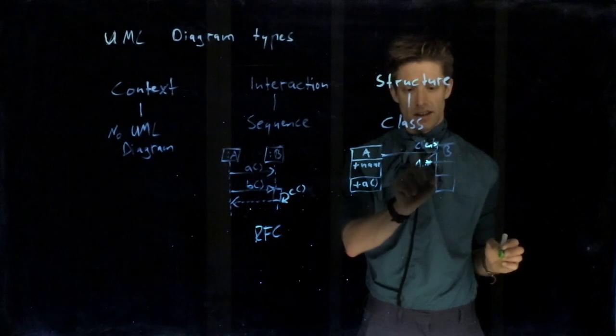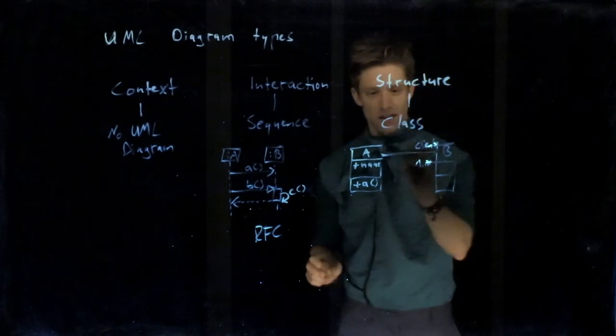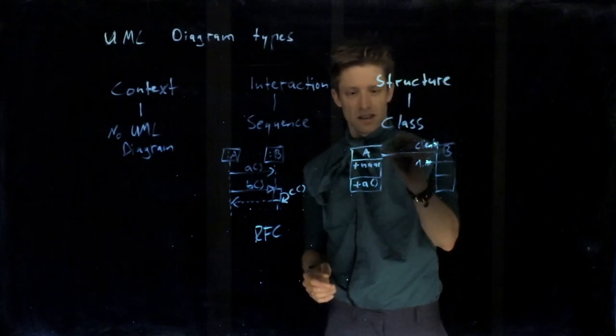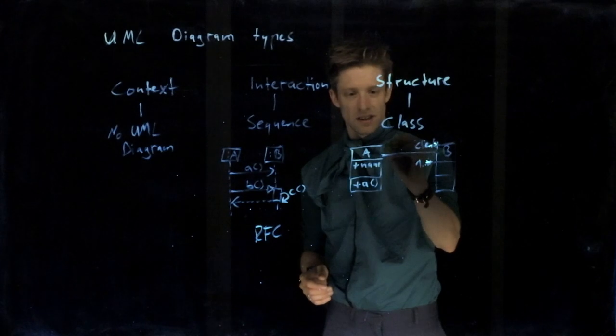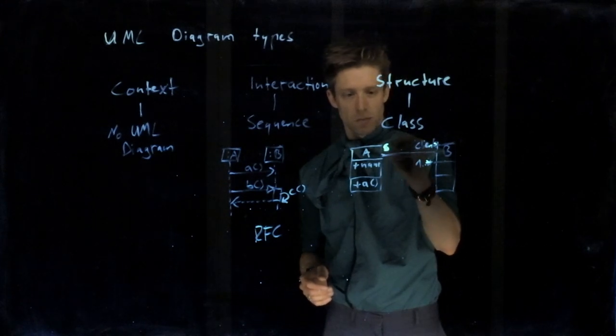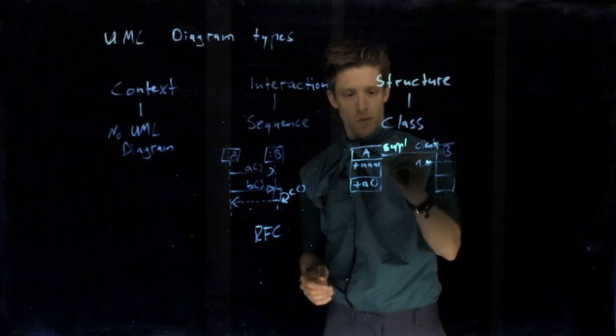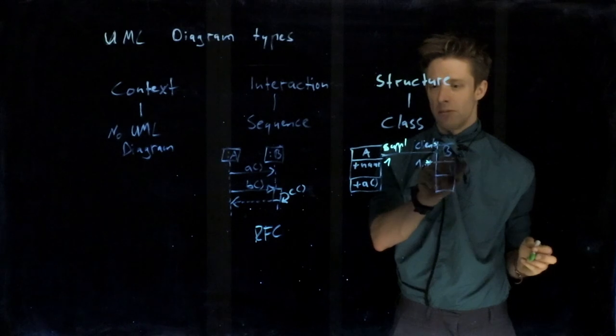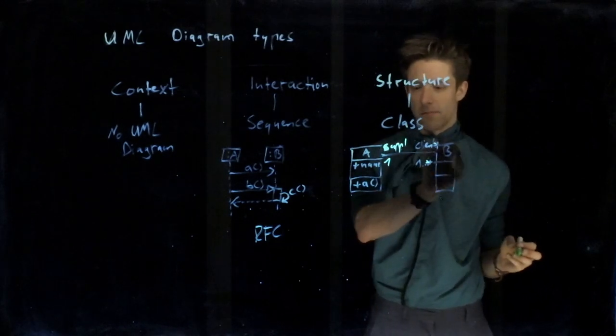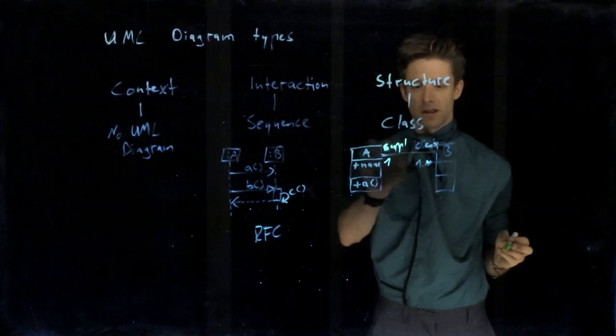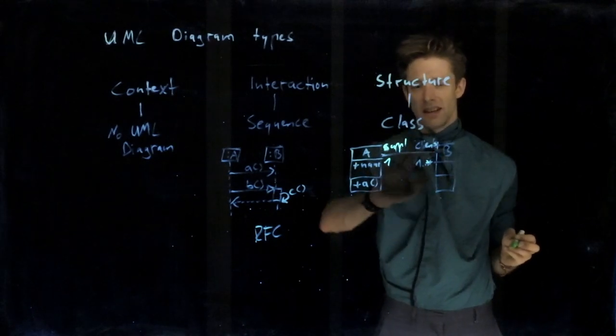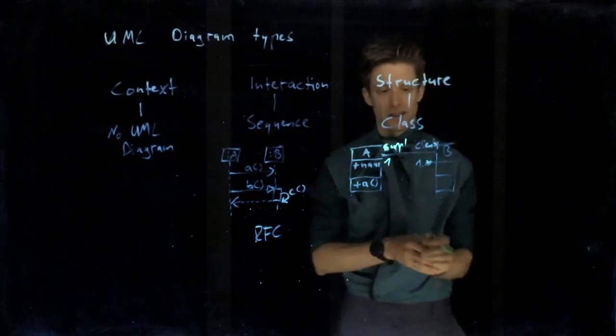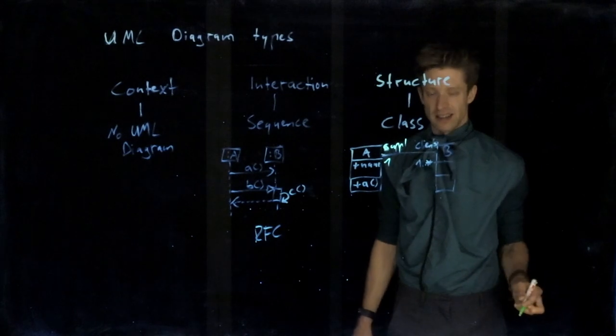If I have an association that goes in both directions, you could, for example, just have supplier one. This would mean A has one to many clients, B has one supplier. You always read from the start to the end, and the role name and association are read to the further end. I have often seen it being inverted, so take care that you get that right.